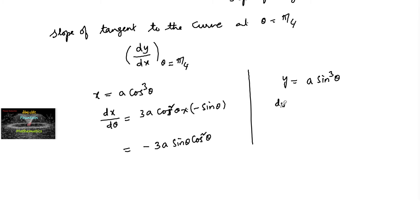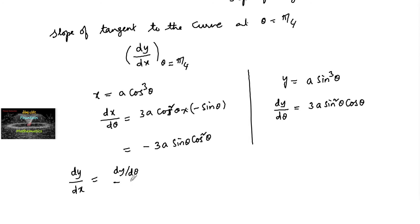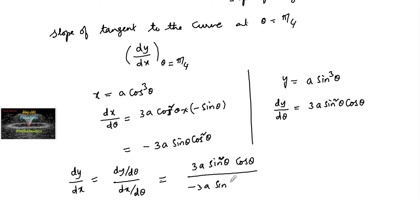Since y is equal to a sin cube theta, dy by d theta is equal to 3a sin squared theta into cos theta. So dy by dx equals dy by d theta upon dx by d theta, which gives 3a sin square theta times cos theta upon minus 3a sin theta times cos square theta.